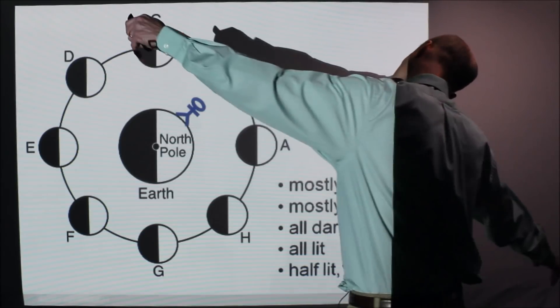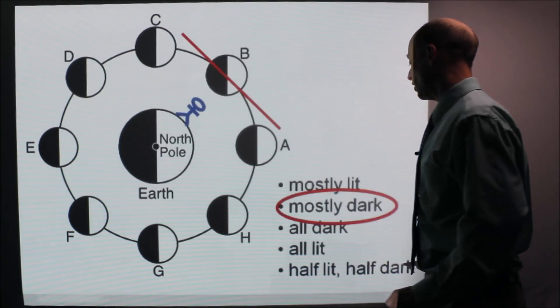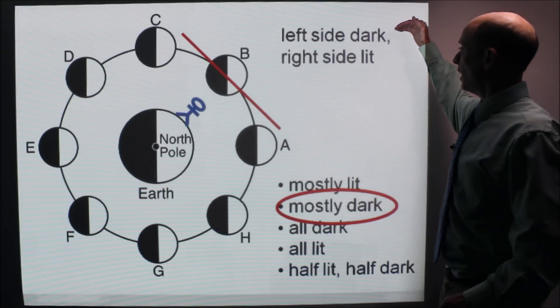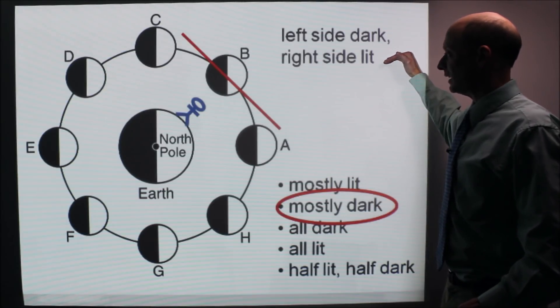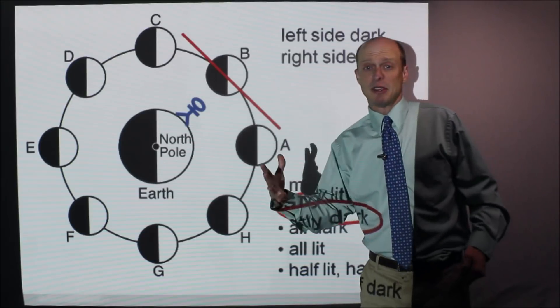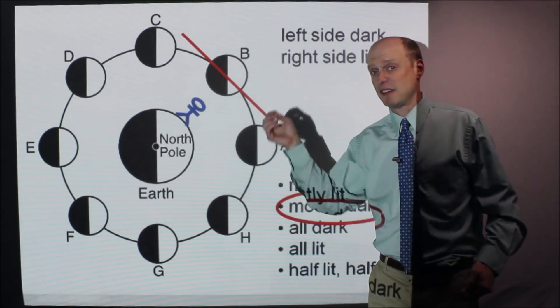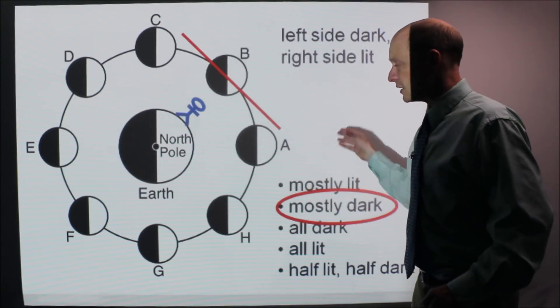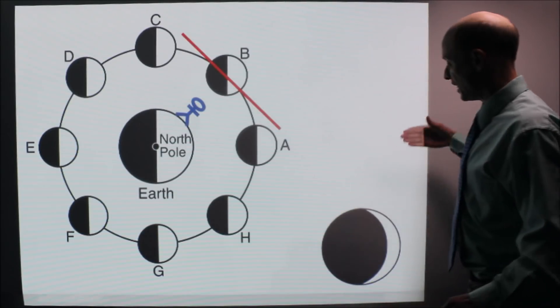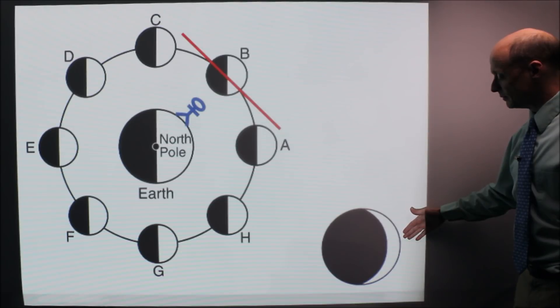It's mostly dark, and the left side is dark. Mostly dark, left side dark, right side lit. And then, this is maybe the hard part of how to draw that. You always want to draw kind of a crescent shape and color in one side or the other. It's going to look like that.